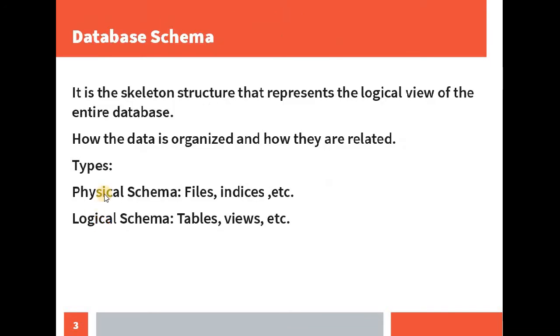Database schema. It is the skeleton structure that represents the logical view of the entire database. It means it is an outline of the database. It represents how the data is organized and how they are related to each other. The types of database schemas are physical schema and logical schema.